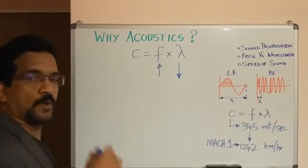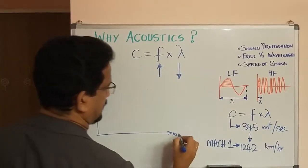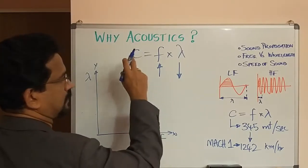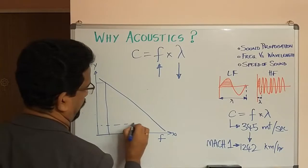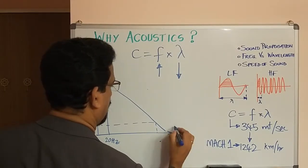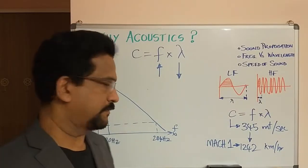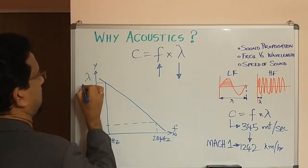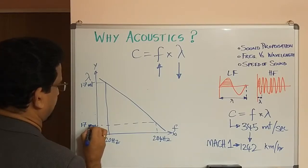We can plot frequency on the x-axis and wavelength on the y-axis. Based on the constant speed of sound, this gives a curve. Let us take two reference points: 20 Hz and 20 kHz — which is the audio frequency range that human ears can listen to. The corresponding wavelengths, calculated from the formula, are approximately 17 meters and 17 millimeters respectively.